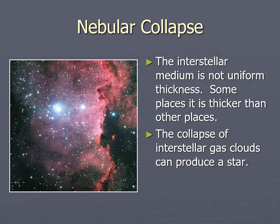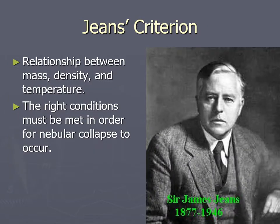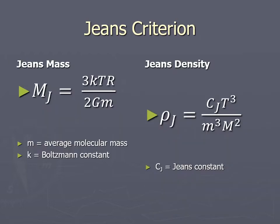In discussing nebular collapse, the Jeans criterion is the mathematical analysis that shows the special conditions necessary for a nebula to collapse under its own mass. You have to have the temperature, the density, and the mass all just right in order for this collapse to occur.